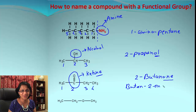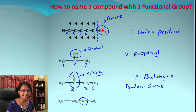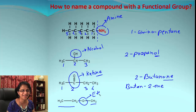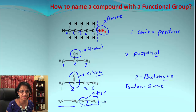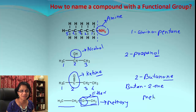Can you guess the next one? There is an oxygen separating two alkyl groups — obviously it must be an ether. We group the smaller alkyl group with oxygen: that's a methyl group with oxygen, which becomes methoxy. So the name will be methoxyethane.